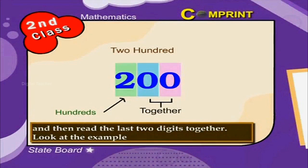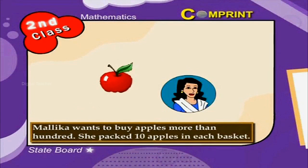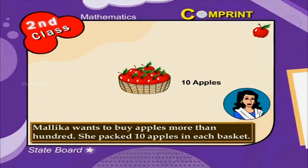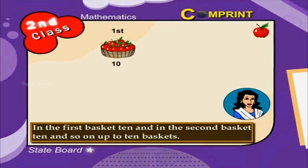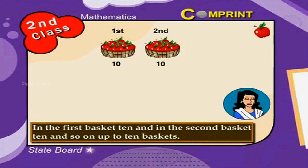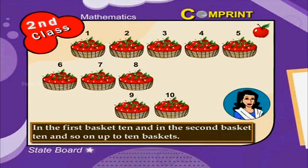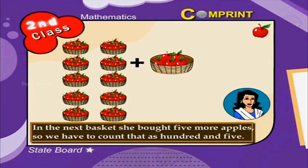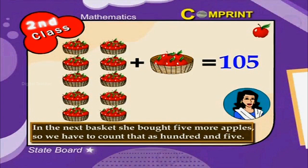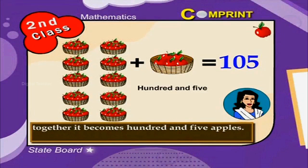Mallika wants to buy apples — more than 100. She packed 10 apples in each basket, with 10 baskets making 100 apples. In the next basket, she bought five more apples. So we have to count that as 105 apples altogether.